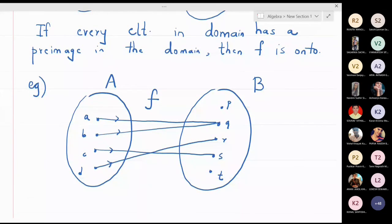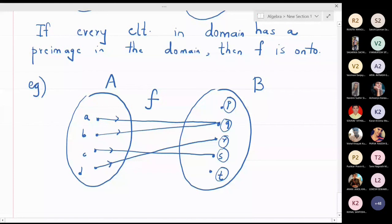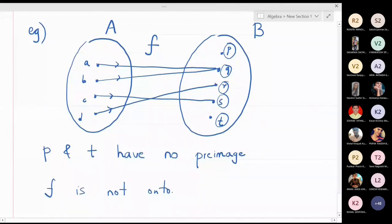Is this function onto? To check, go to the right-hand side set and verify that every element has a pre-image. The pre-image of q is a and b, so q has a pre-image. The pre-image of r is d. The pre-image of s is c. But p has no pre-image and t also has no pre-image. So p and t have no pre-image, which means this function f is not onto. For a function to be onto, every element in the codomain must have a pre-image in the domain.